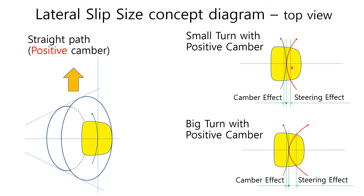Therefore, the steering angle must be bigger to overcome the positive camber angle for the same curved path compared with the negative camber case. When the steering angle gets bigger, camber doesn't change, but the steering effect gets bigger. As shown in the picture, the tire experiences a stretching force in the contact patch because of the different directions of camber and steering. Consequently, this has a negative effect on tire wear.